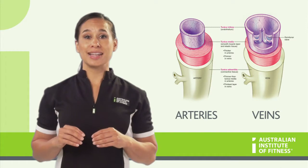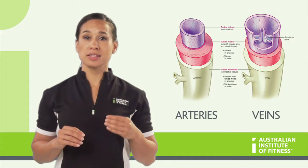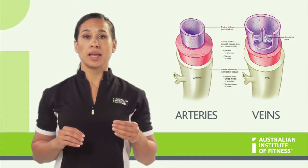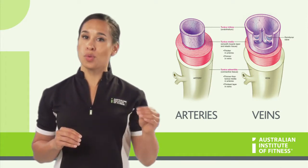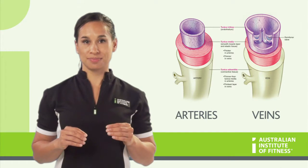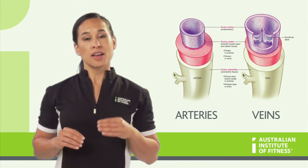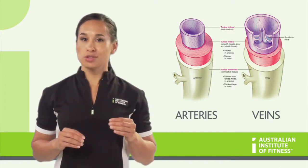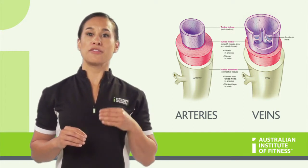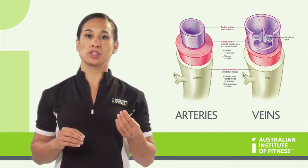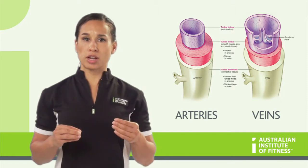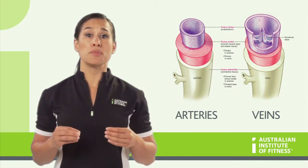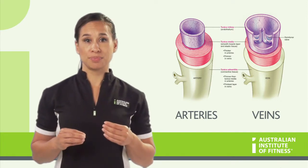Veins, on the other hand, are made of thin smooth muscle, and will always take blood back towards the heart. Veins cannot contract, so have valves in them to stop backflow of blood, and also rely on the contraction of muscle to help move the blood.